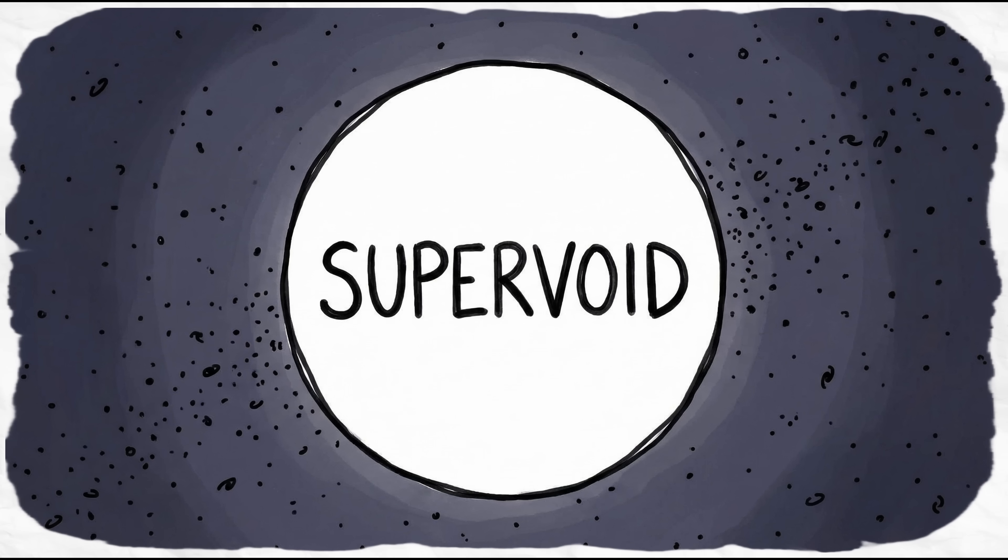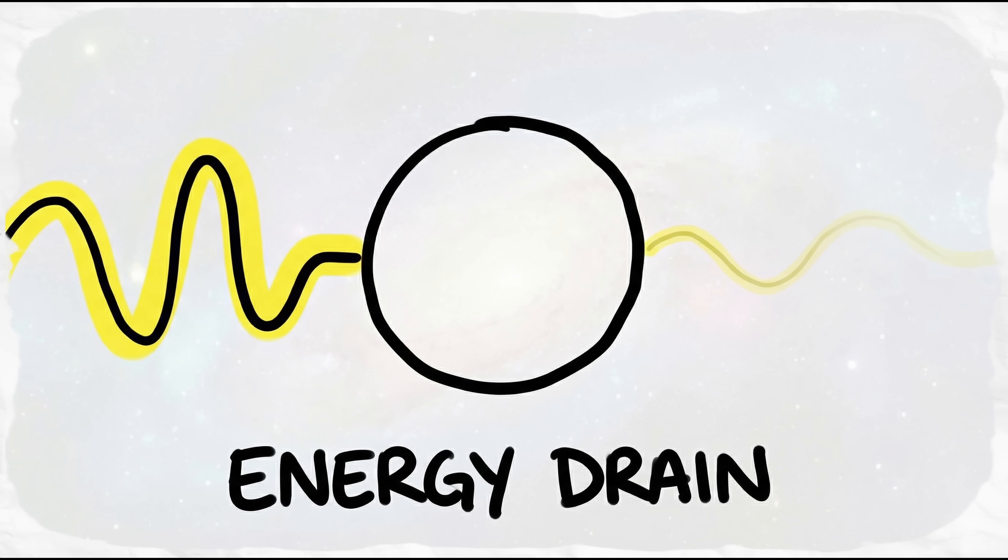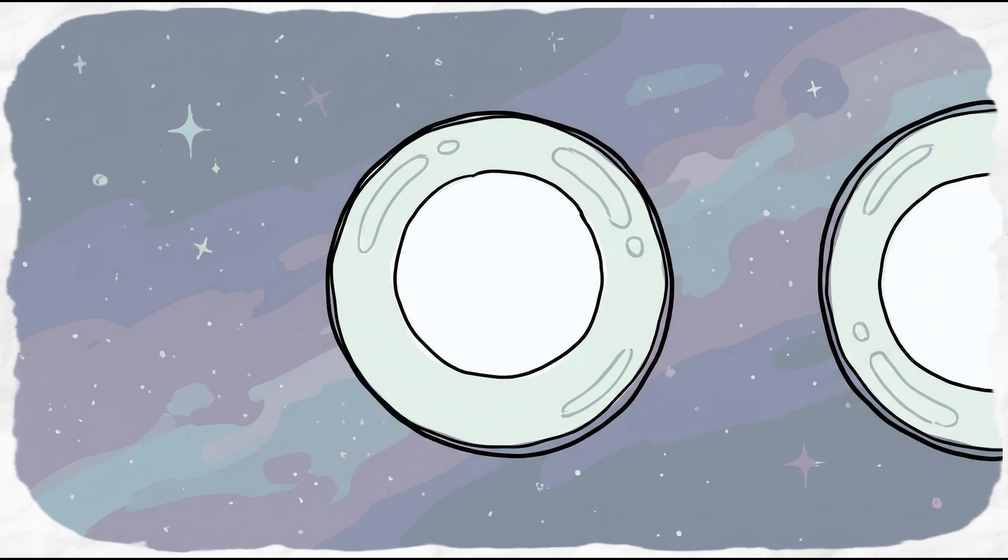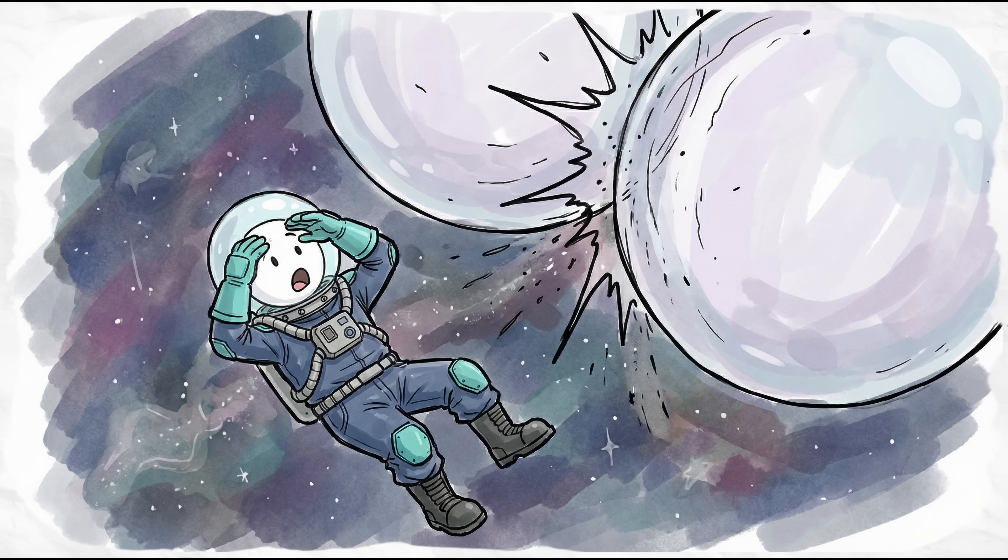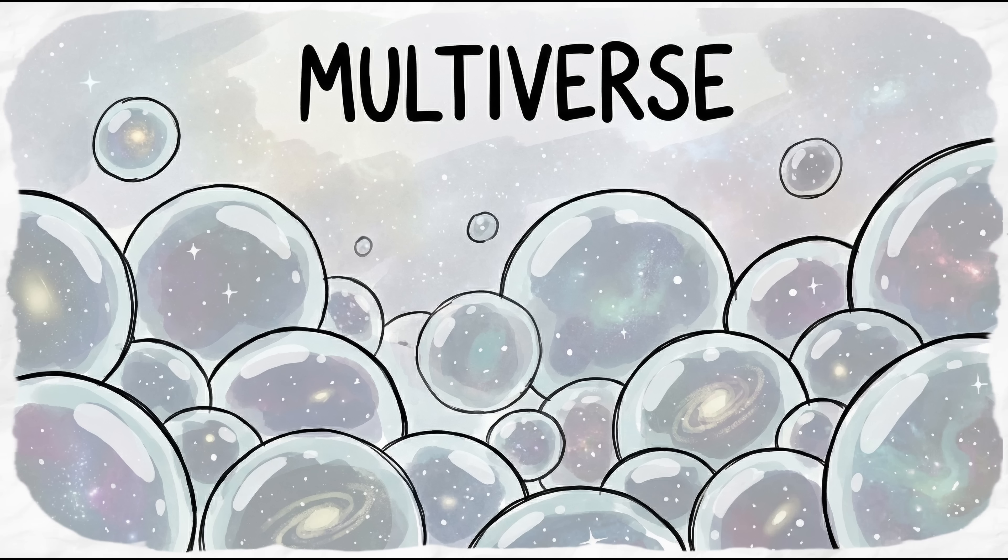Some scientists think it's a supervoid. Basically a place so empty it sucks the energy out of light passing through it. But others have a much weirder theory. The cold spot could be a bruise. It might be the literal spot where our universe bumped into another one while it was expanding. It's a glitch that makes it look like we're just one bubble in a much bigger sink.